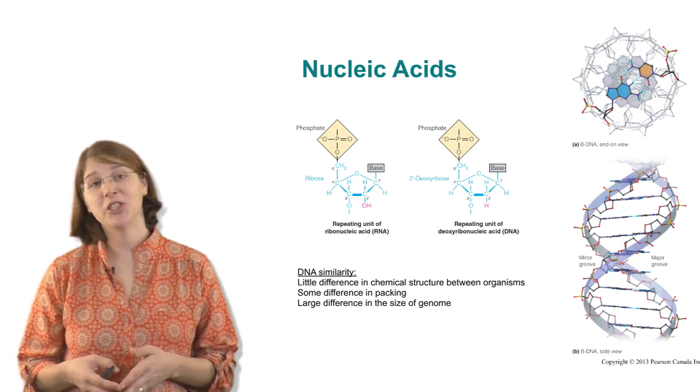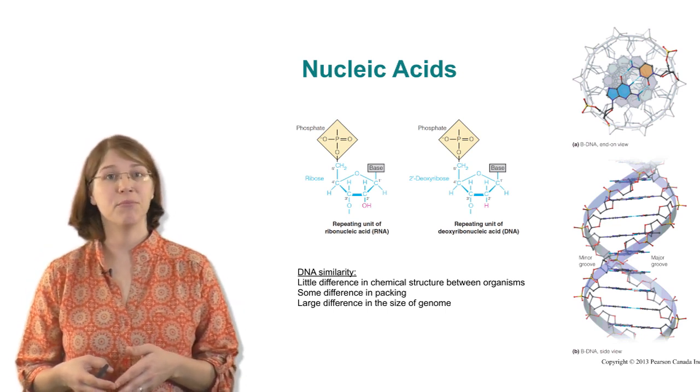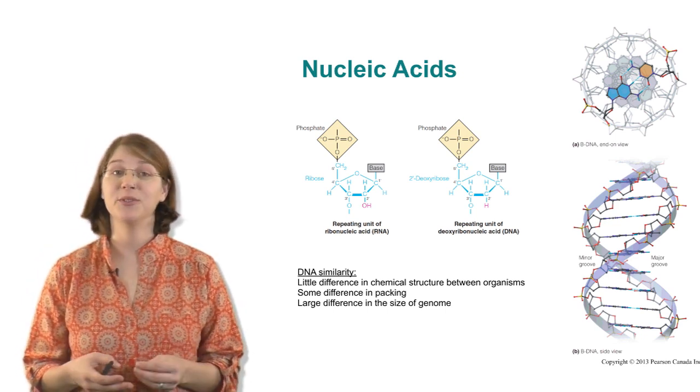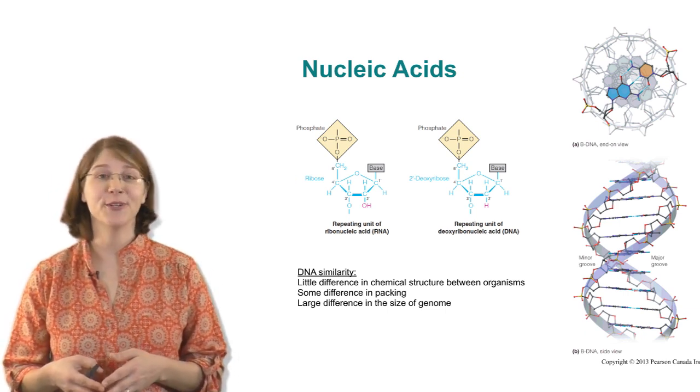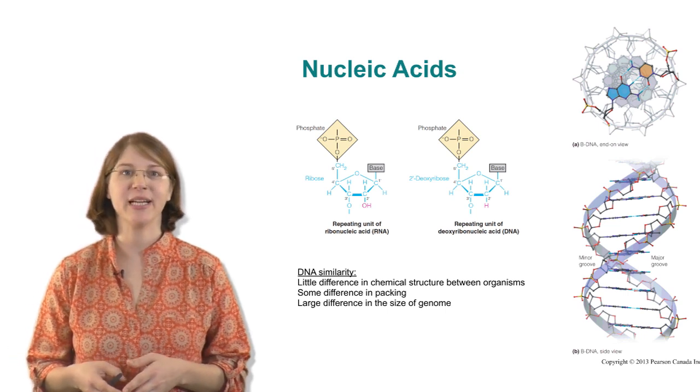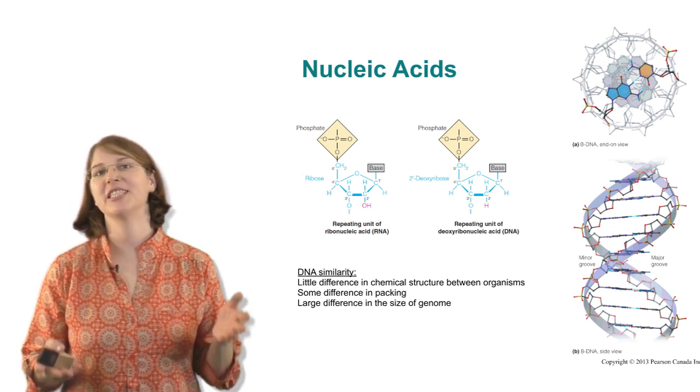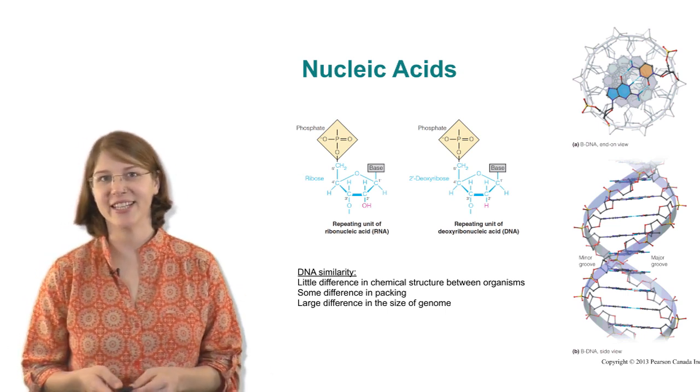The smallest known genome is 2.25 million base pairs, and the largest known genome is 149 billion base pairs, and so there's a huge difference in how much nucleic acid every cell has.